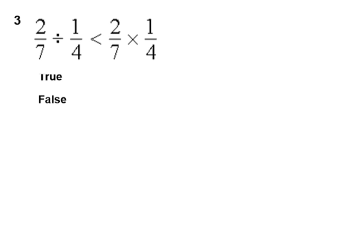Question three, two-sevenths divided by a quarter is less than two-sevenths multiplied by a quarter. Is that true or false?